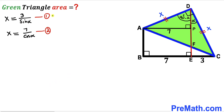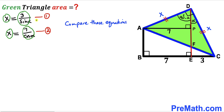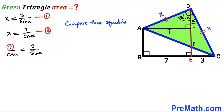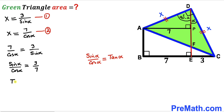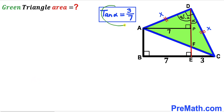We now have two equations with identical left-hand sides: X = 3/sin(alpha) and X = 7/cos(alpha). Equating the right-hand sides and rearranging, we get sine of alpha divided by cosine of alpha equals 3 divided by 7. Since sine over cosine equals tangent, we find that tangent of alpha equals 3 divided by 7.